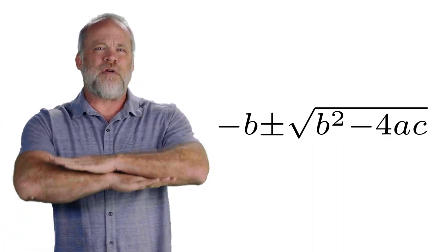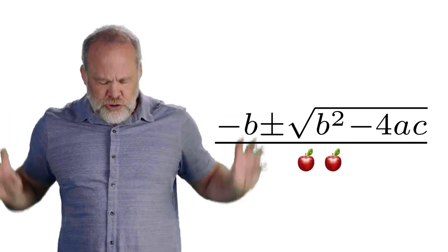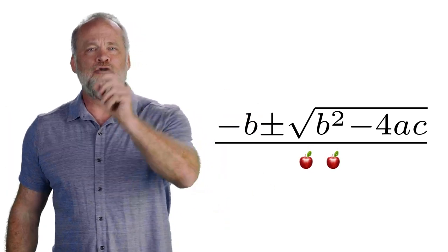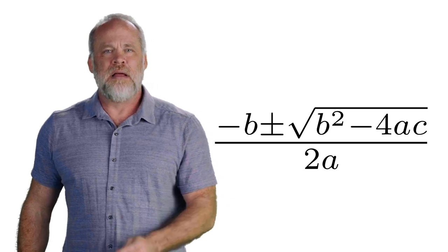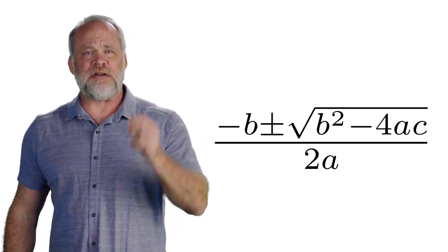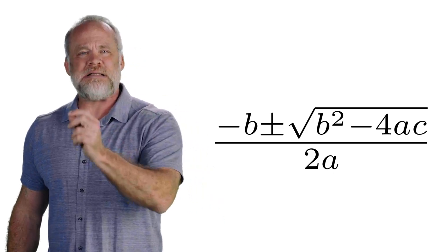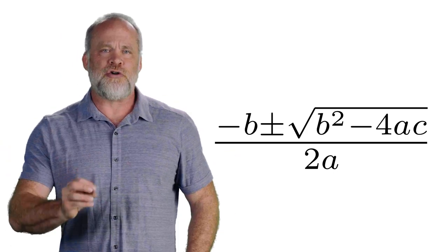Then just remember, all of this is happening over two apples. Over two apples, 2a. The quadratic formula is negative B plus or minus the square root of B squared minus 4AC over 2A.